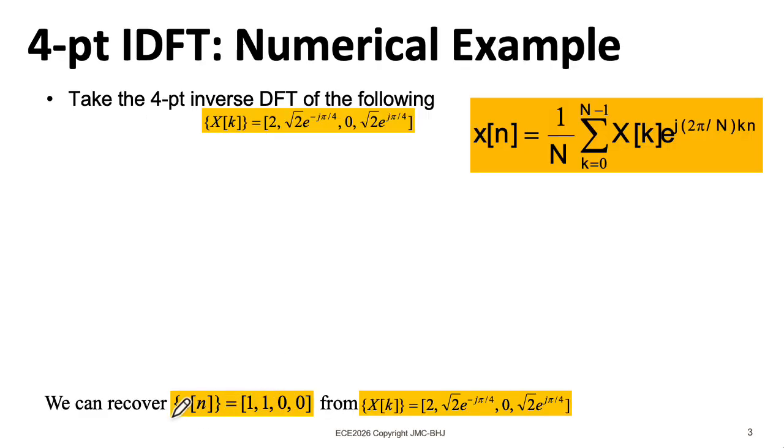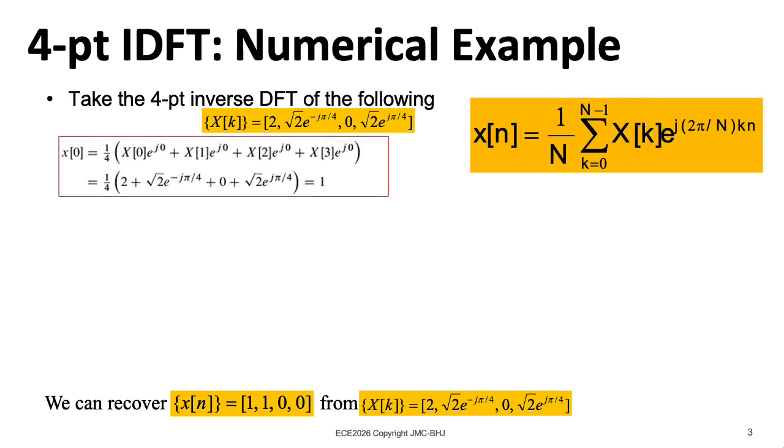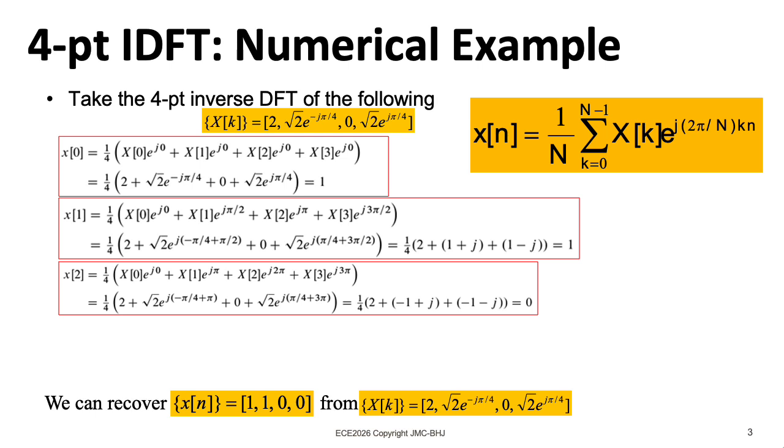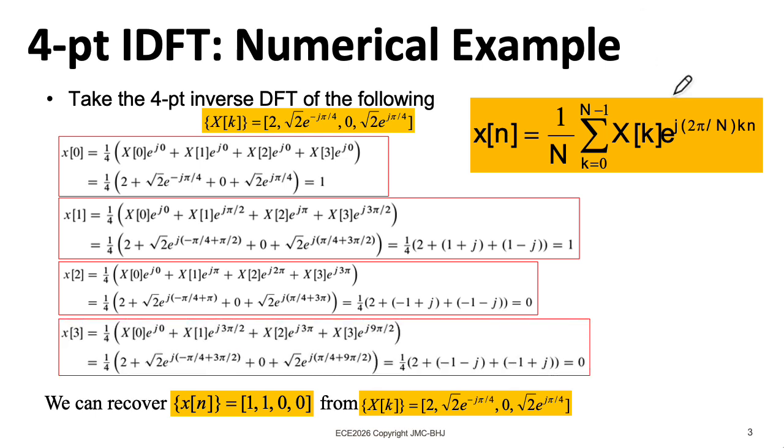Now we should check to make sure we can get the original time domain sequence back from the discrete Fourier transform by plugging it into the inverse discrete Fourier transform formula. I'm not going to bore you by slogging through every single detail here. The main thing to note is that the inverse transform has a plus in the exponent instead of a minus like the forward transform. Also, the inverse transform has this one over N sitting out in front by our transform conventions. In this example, if you forgot that, this would be four times bigger than it should be.